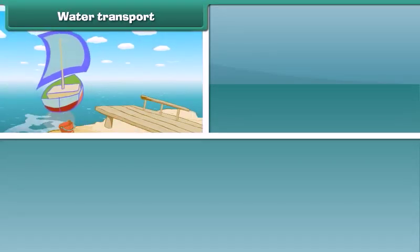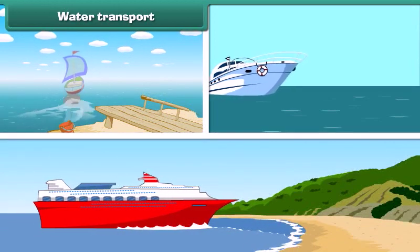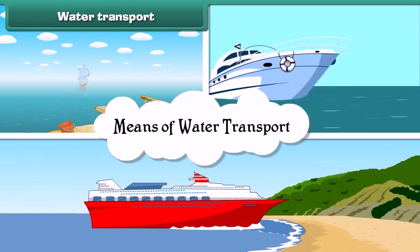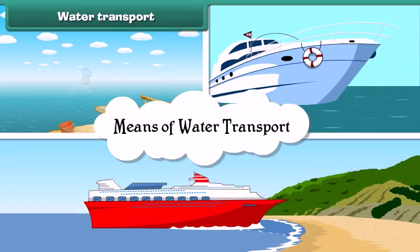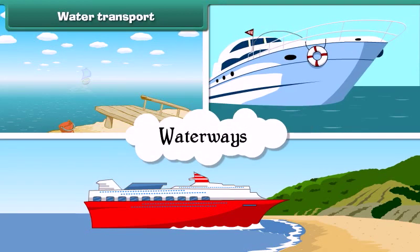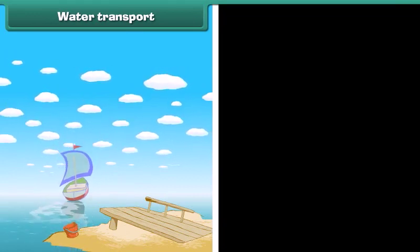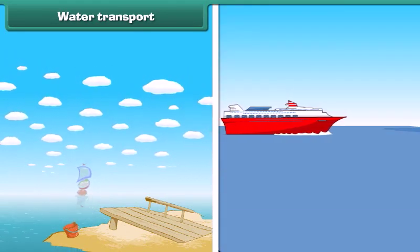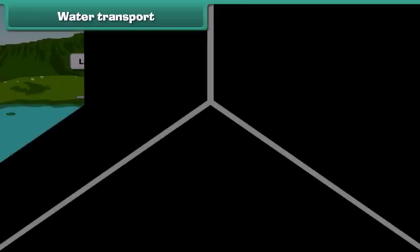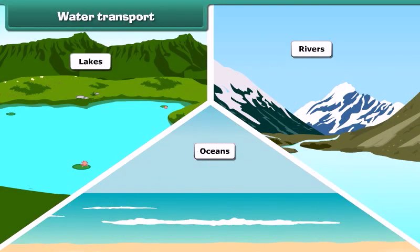You have seen boats, steamers and ships. These are the means of water transport. These vehicles run through waterways. Boats run in lakes and rivers while ships run in deep and large water bodies. Lakes, rivers and oceans are examples of waterways.